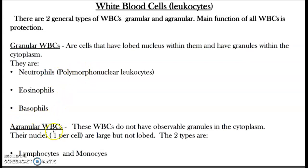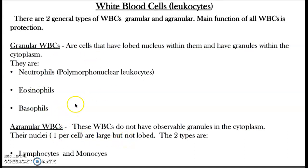Agranulocytes have no granules inside and their nuclei are large but not lobed like the granulocytes. Among the granular cells, we have neutrophils, eosinophils, and basophils. Among the agranulocytes, we have lymphocytes and monocytes.